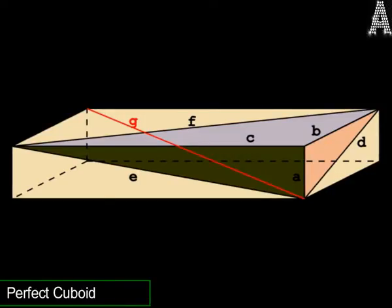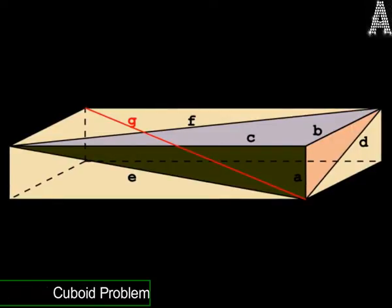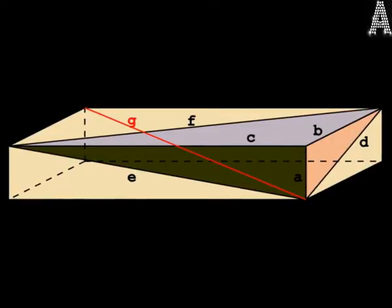Perfect Cuboid Problem. Remember the Pythagorean theorem, a squared plus b squared equals c squared? The three letters correspond to the three sides of a right triangle. In a Pythagorean triangle, all three sides are whole numbers. Let's extend this idea to three dimensions.